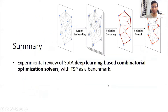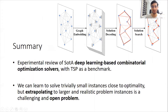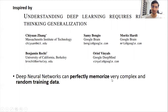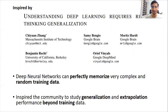This talk is about deep learning approaches for combinatorial optimization problems with TSP as a benchmark. Our main finding is that a lot of the approaches today can be used to solve trivially small problem instances, but extrapolating to larger and more realistic instances is still an open problem. Something inspiring this work is the paper 'Understanding Deep Learning Requires Rethinking Generalization,' which introduced the idea that deep neural networks can memorize complex random data, but the community should care more about generalization and extrapolation capability.